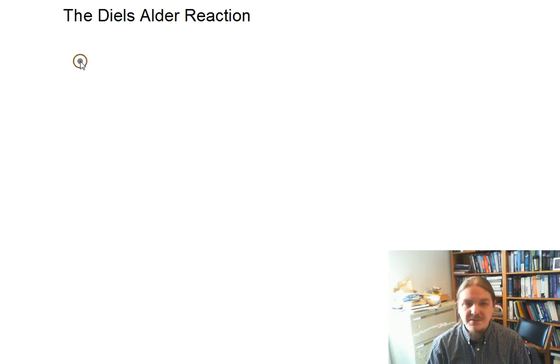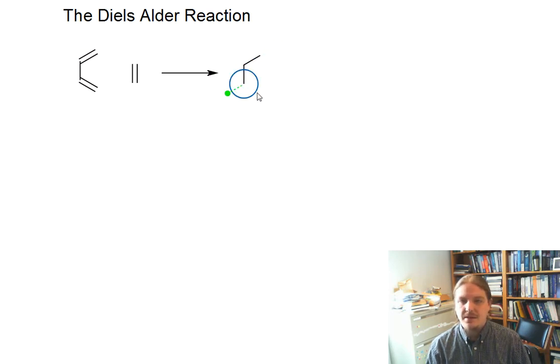At its very simplest, the Diels-Alder reaction is an addition reaction that occurs between two molecules: a diene and another molecule that contains a pi bond. The product of this reaction is a cyclohexene.